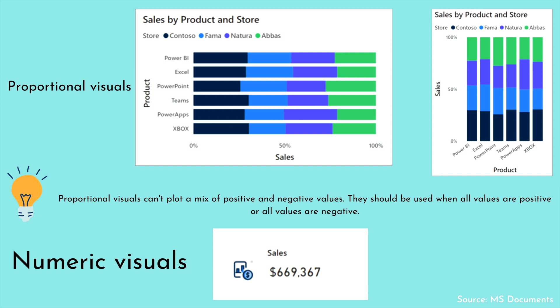In Microsoft Power BI we can also use numeric visuals. If you need to represent KPI values — for example, total sales or total orders — you can use a card visual. Numeric visuals show high-level call-out values that demand immediate attention, such as KPIs. They can be very powerful in dashboard and analytical reports because they communicate important data quickly.